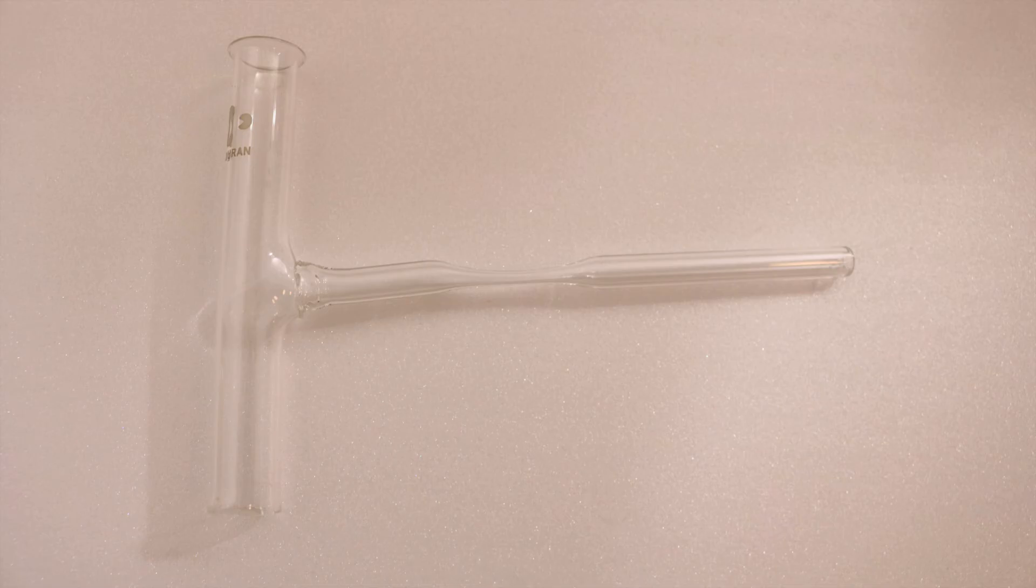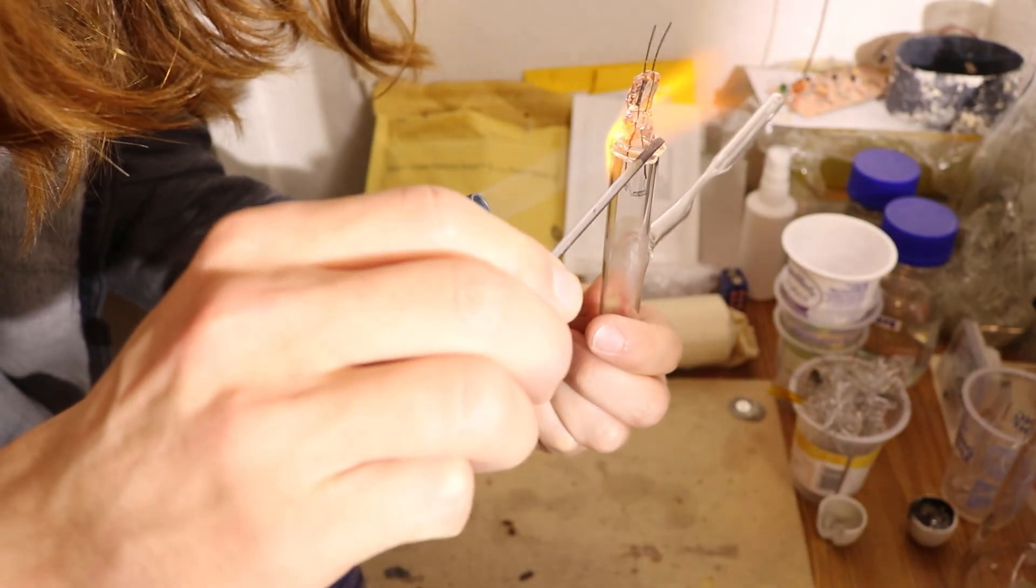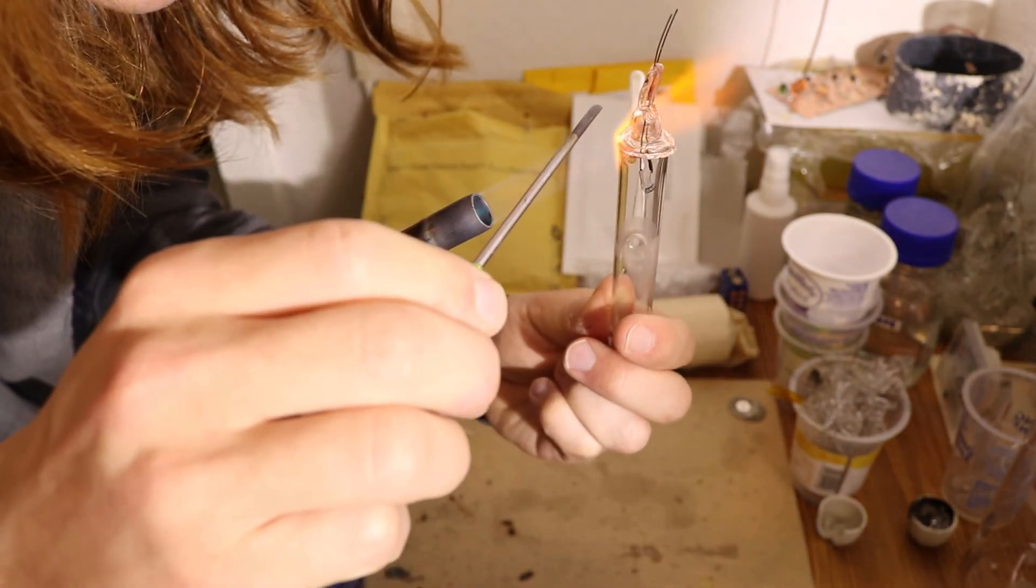The evacuation stem is also made a bit thinner so you can melt it off more easily. After that, I melted both sides to the tube.